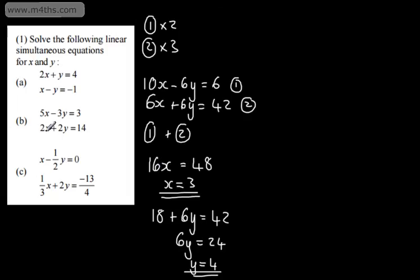Let's check those work: 2 lots of x is 6, plus 2 lots of y is 8, equals 14. And 5 lots of x is 15, minus 3 lots of 4, which is 12, gives 3. So they hold true for both equations. That's the method of elimination.